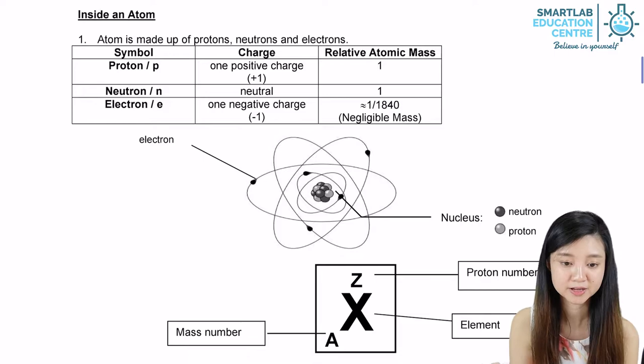Let's look at what is inside an atom. An atom is made up of protons, neutrons, and electrons.